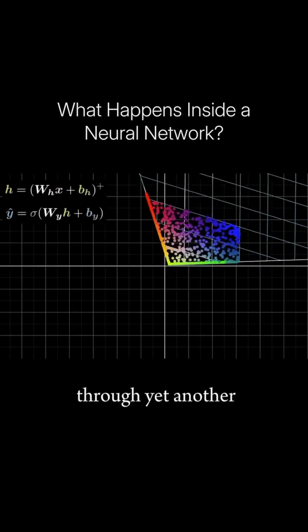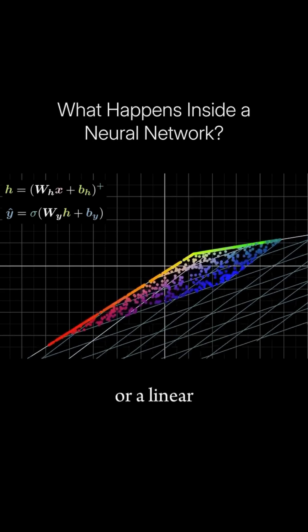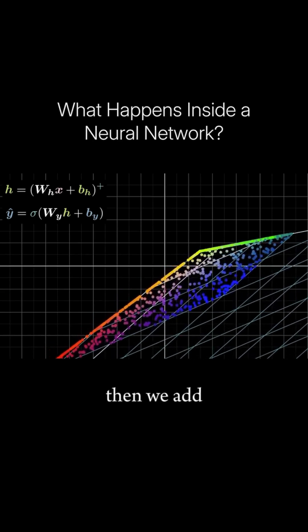After this, we pass it through yet another matrix multiplication, or a linear transformation. Then we add the bias.